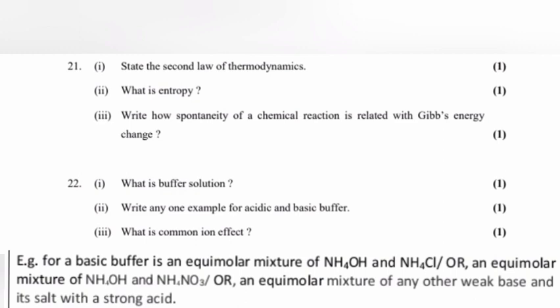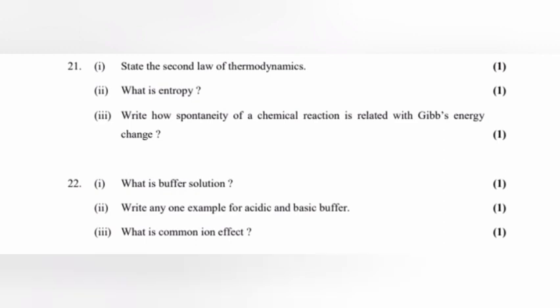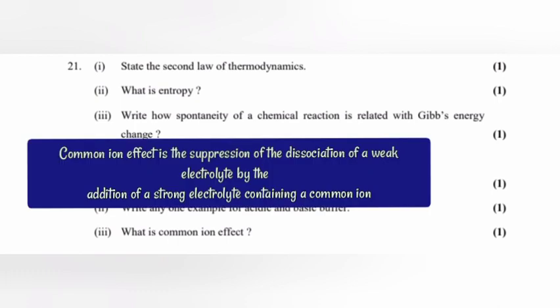Part 3: What is common ion effect? Answer: Common ion effect is the suppression of dissociation of a weak electrolyte by the addition of a strong electrolyte containing a common ion. Or, write its example.